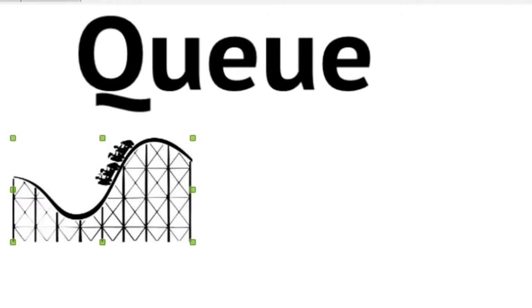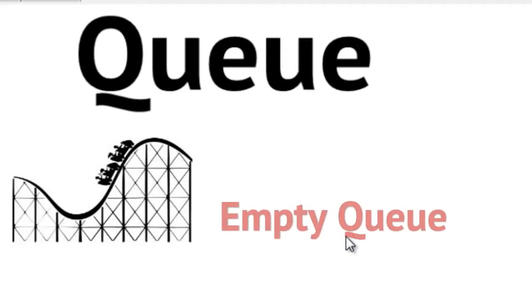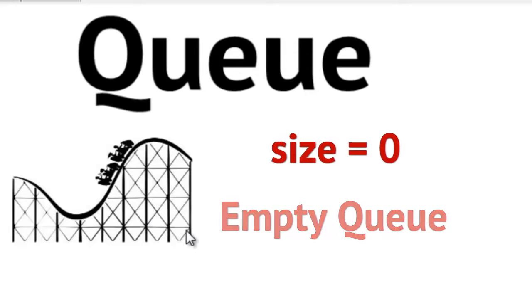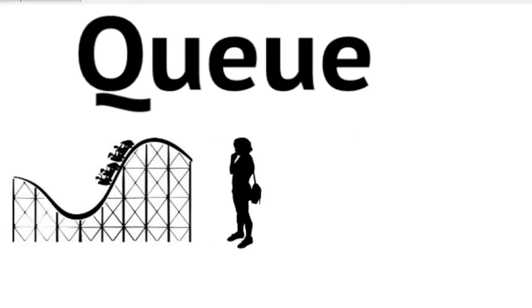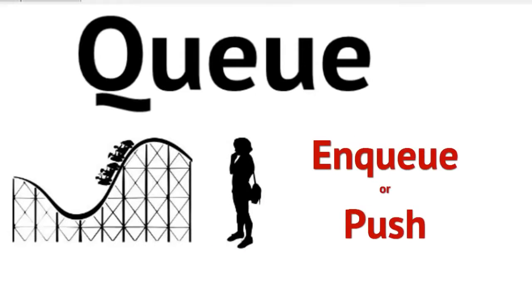Let's say we're at an amusement park and we have a roller coaster ride. Right now we have some people currently riding, and we have a line. Right now our line is empty, so we could say our queue for this ride is currently empty, or the size of the queue is zero. Then all of a sudden a lady comes up and gets in line — we would say she is now enqueued.